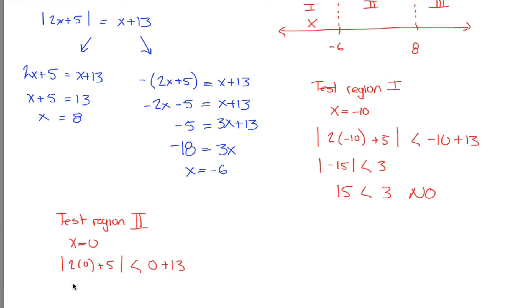Well, 2 times 0 is just 0. 0 plus 5 is just 5. The absolute value of 5 is just 5 and 5, sure enough, is less than 13. That's true.